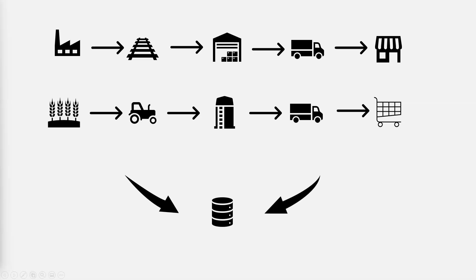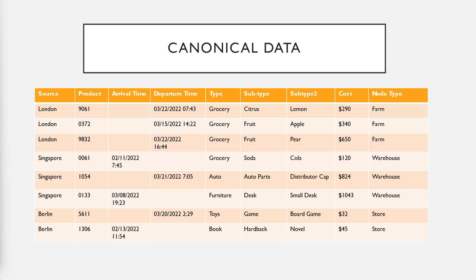GS1 enables tracking of products through this entire supply chain. The data we're interested in for this solution is flow data — how much of a particular product is going in and out of a given node.